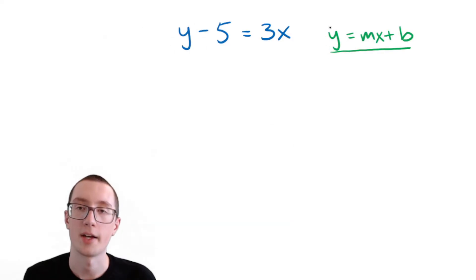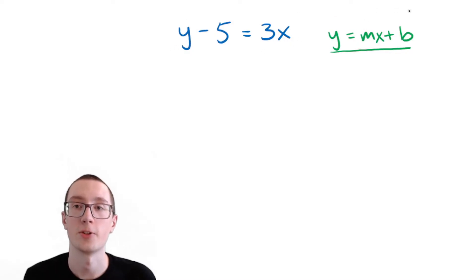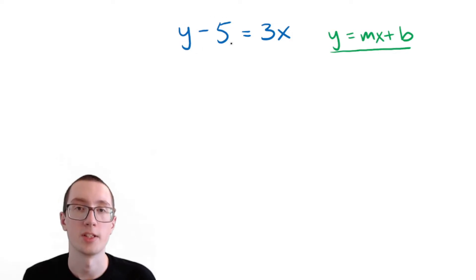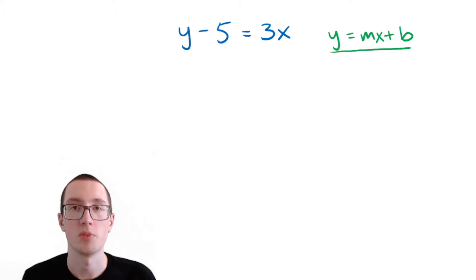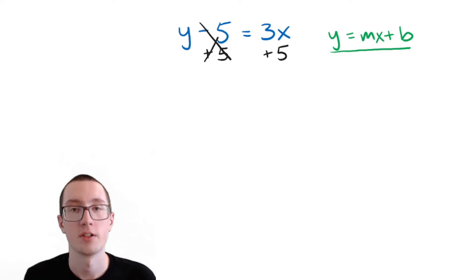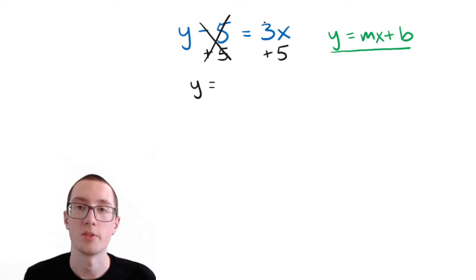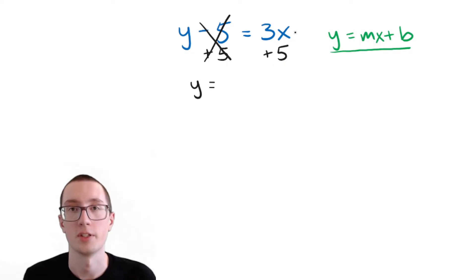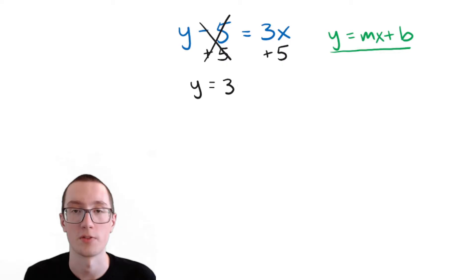So in this equation, y is by itself. Let's try to get y by itself in this equation and see if it turns into this form. We can get y by itself by getting rid of this minus 5, and we can do the opposite of minus, which is plus, to get rid of it. So we will add 5 to both sides. These cancel out, and on this side we're just left with y. On the other side, we have 3x plus 5. This has the letter and this doesn't, so you can't add these together, so we'll just leave it as 3x plus 5.